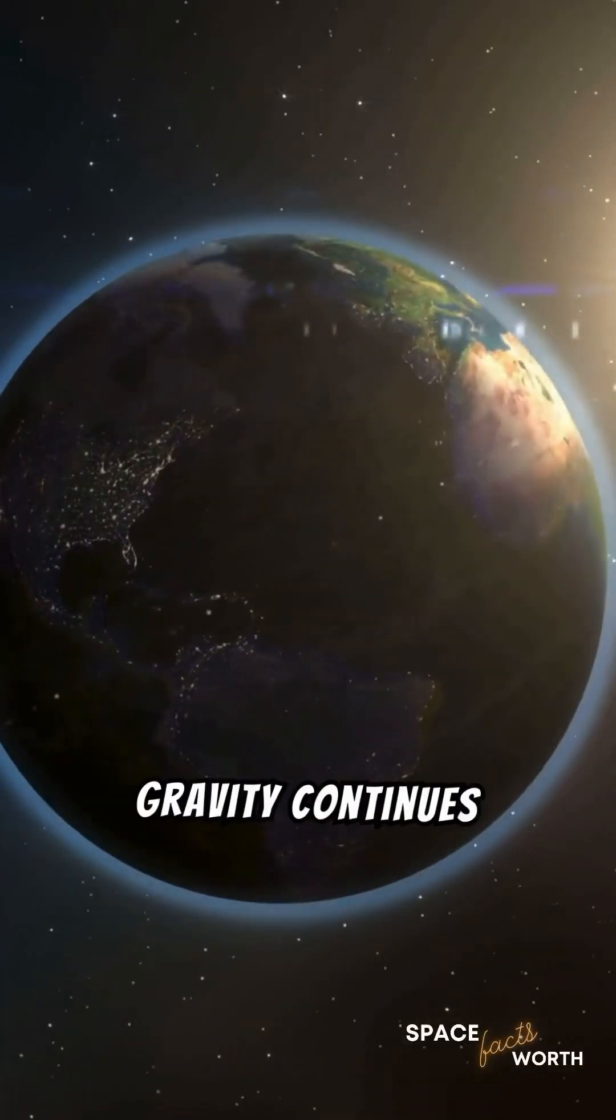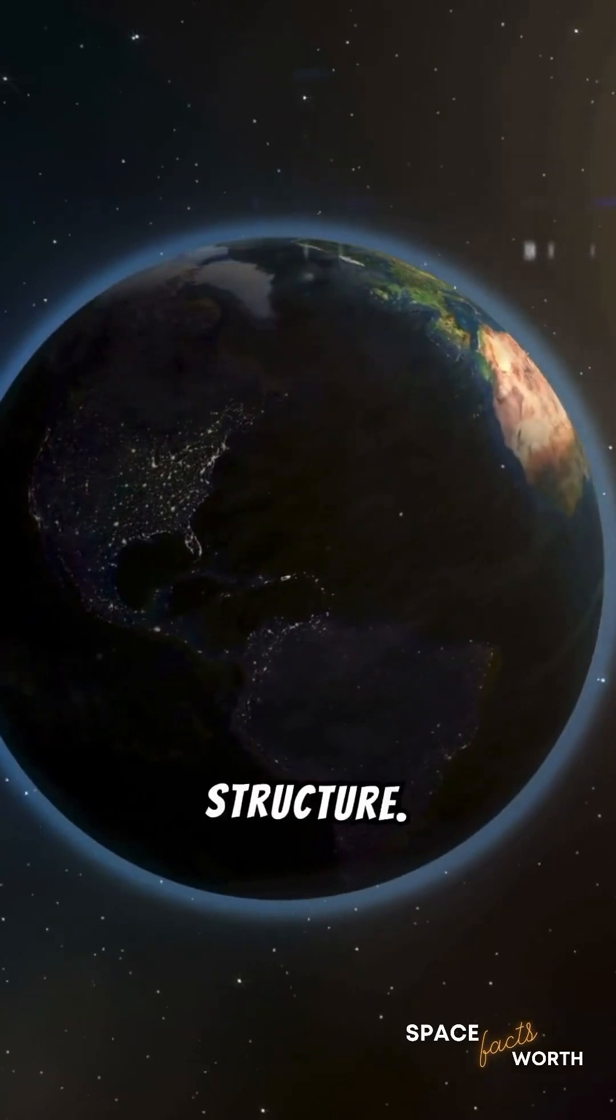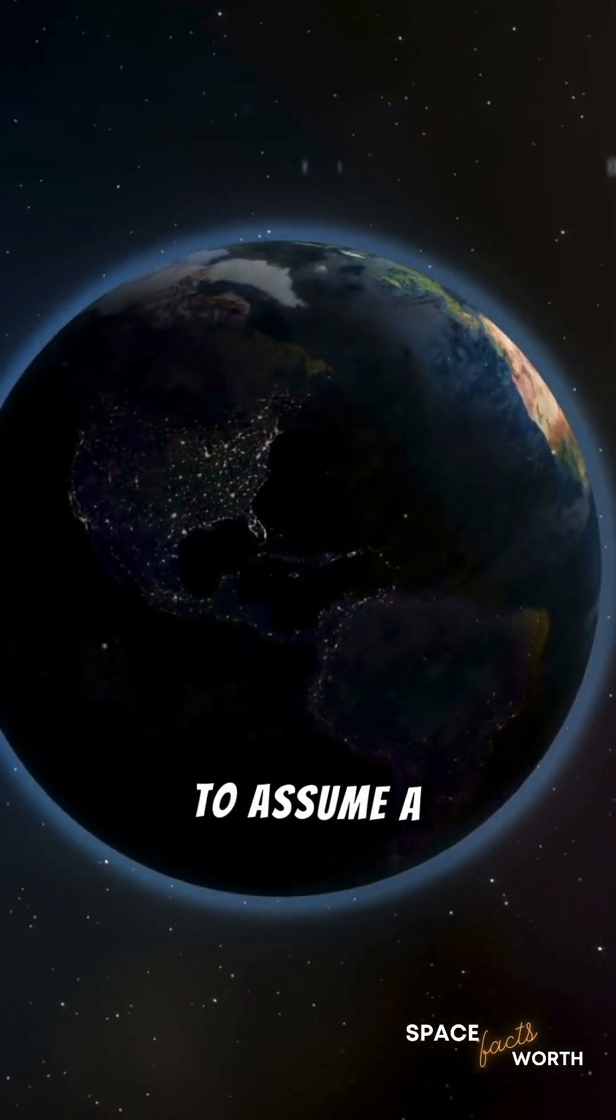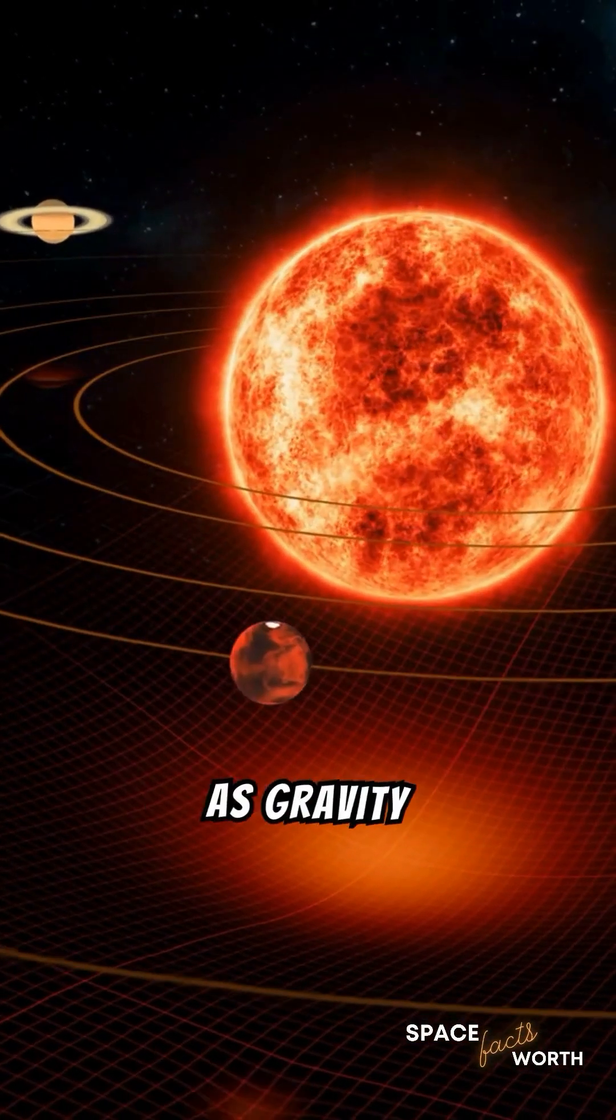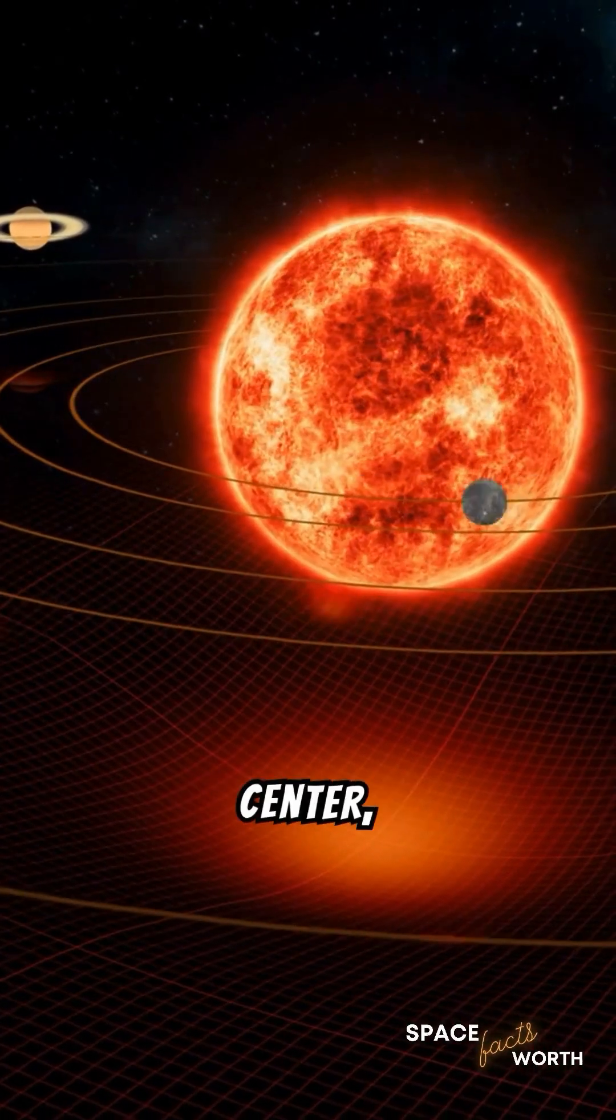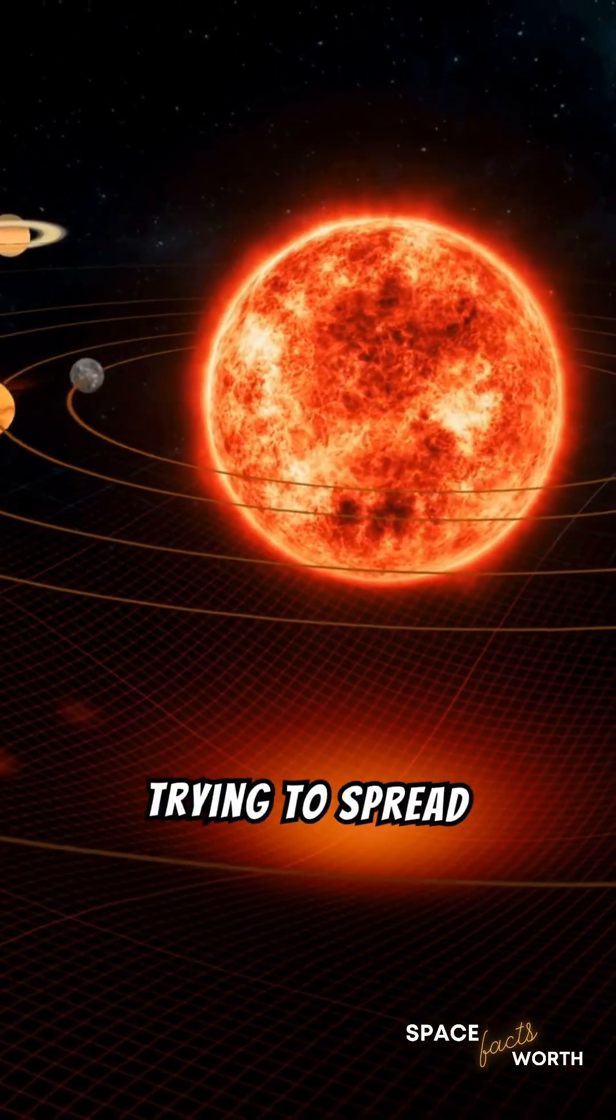Once formed, gravity continues to shape a planet's structure. It causes planets to assume a roughly spherical shape as gravity pulls matter towards the center, balancing the force of material trying to spread out.